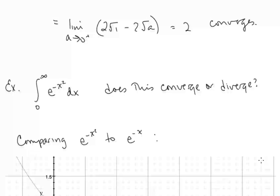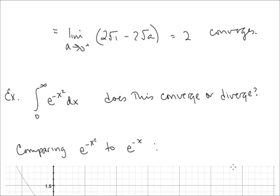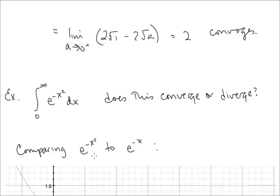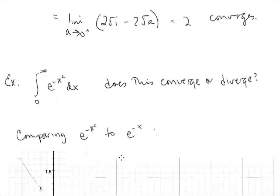Let's consider the integral from 0 to infinity of e^(-x²). Does this converge or diverge? There are no powers of x in the denominator, so we won't compare it to 1/x^p. Instead, let's compare it to e^(-x), which we can integrate. Remember that e^(-x²) is one of the functions for which we cannot find an antiderivative, so we can't evaluate this improper integral directly.